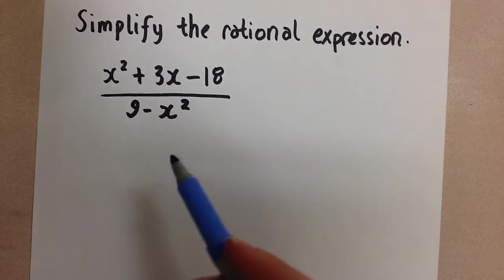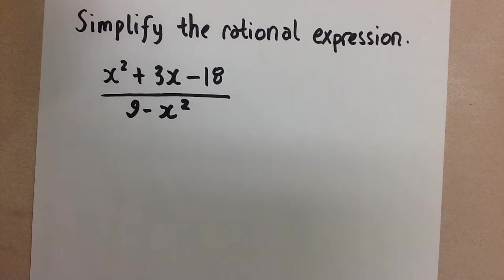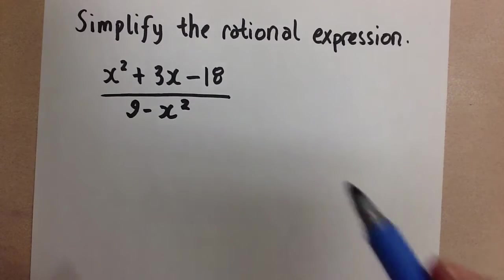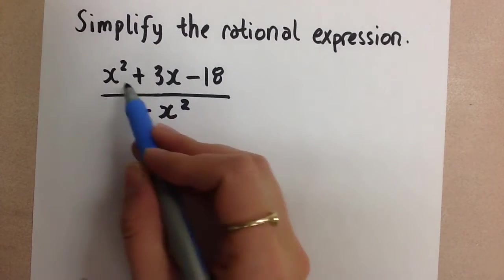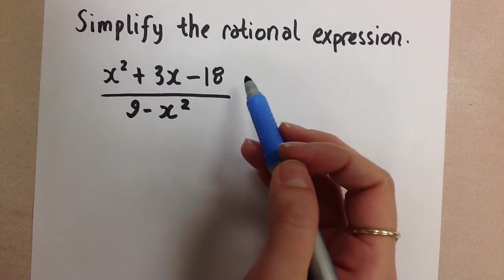And to simplify these we want to start by trying to factor the numerator and the denominator separately. So the numerator is a simple trinomial, so we'll factor that in the usual way.